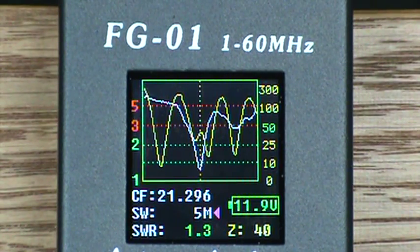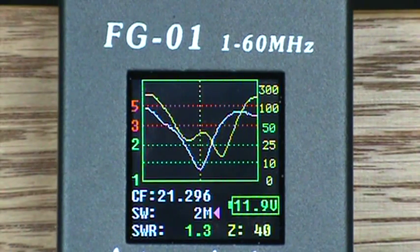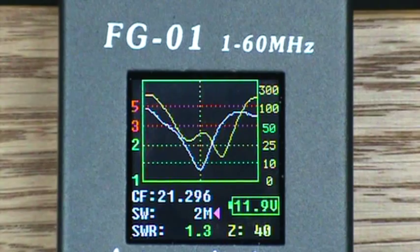So that gives you a little idea on how the adjustments can be made with the FG-01 and I can of course change frequencies and graph the entire band if I'd like.